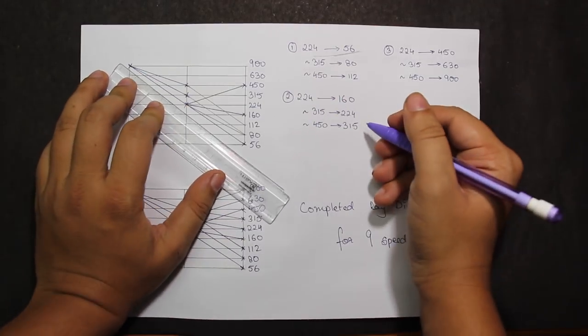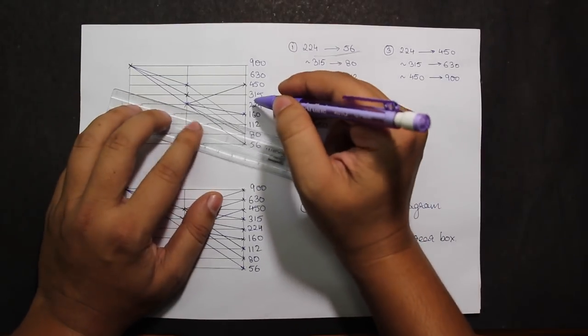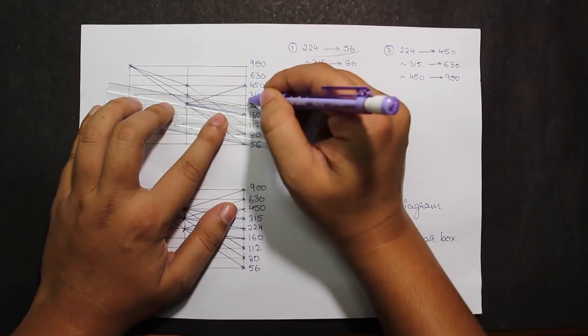Next, taking the baseline as 224 to 160, I'll be getting two more speeds from 315 to 224 and 450 to 315.